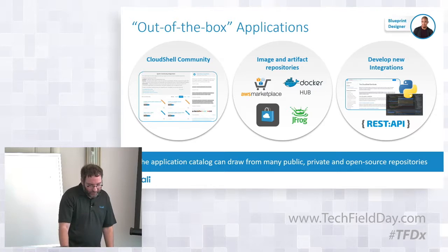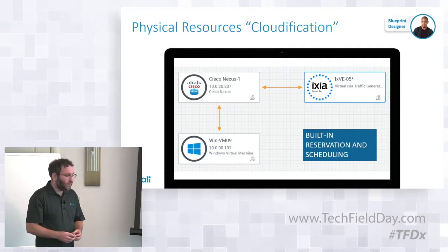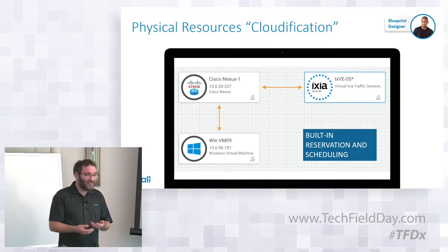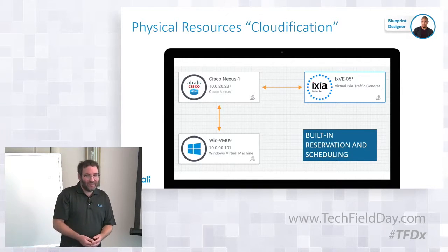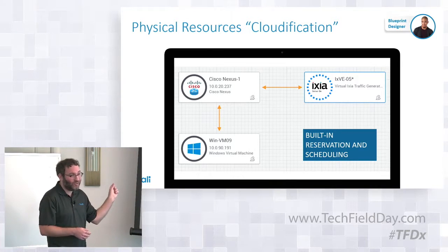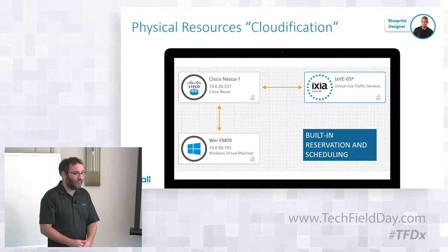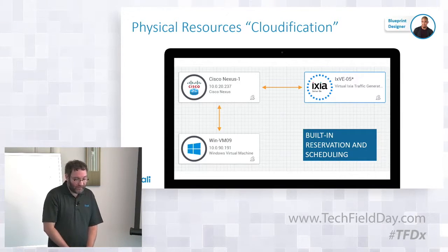I want to briefly touch on the physical side. Our approach to physical resources is to treat them like a cloud - the user coming in should say 'I need that' and not care whether that means spinning up a VM for the duration they need it and then tearing it down, or whether it means allocating a specific port or device and making sure it stays allocated for the duration of their activity, while somebody else gets a different port or device. That creates a cloud-like experience.